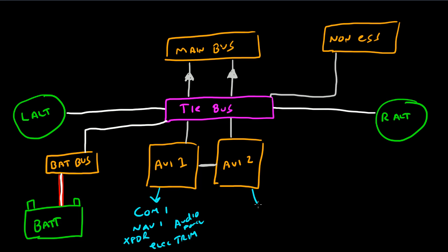Avionics 2 runs NAV 2, COM 2, and the marker beacon. And that's it for the Avionics, the COMs, the NAVs, the transponder, the audio panel, marker beacon, and for some reason, the electric trim is also on Avionics number one.